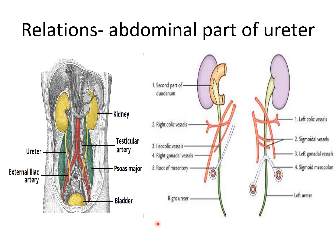Relations of the abdominal part of ureter. The posterior relations of right and left ureters are almost the same — related to the psoas major muscle, with tips of transverse processes deep to it and the genitofemoral nerve in front of it, and also related to the bifurcation of the common iliac artery. On the right side, the right ureter is related anteriorly to the second part of the duodenum, right colic vessels, ileocolic vessels, right testicular or ovarian vessels, and root of mesentery.